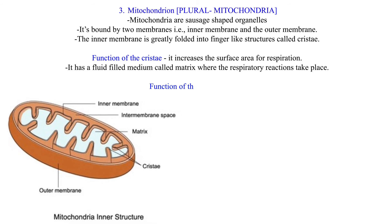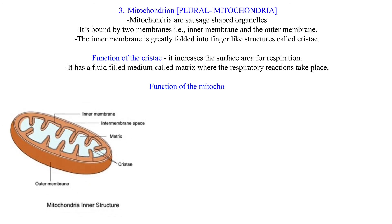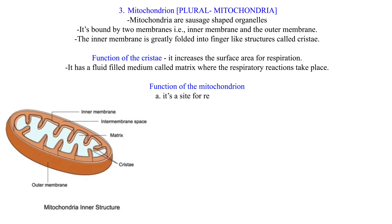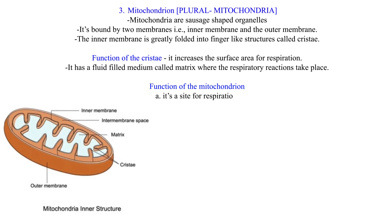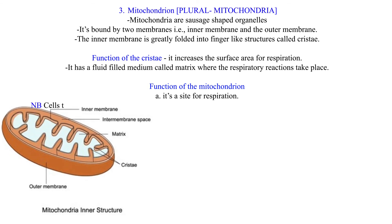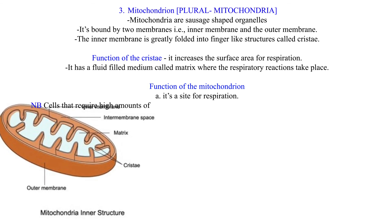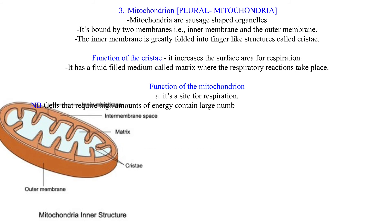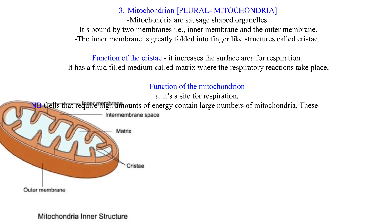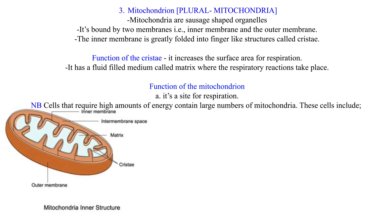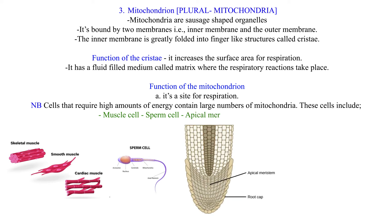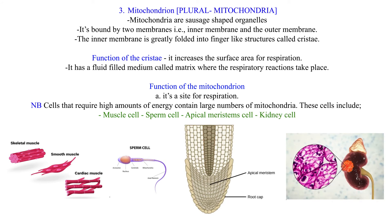Function of the mitochondrion: It is a site for respiration. Note that cells that require high amounts of energy contain large numbers of mitochondria. These cells include muscle cells, sperm cells, apical meristem cells, and kidney cells.